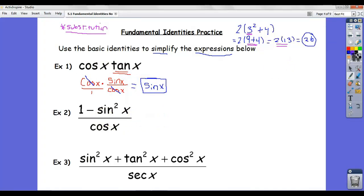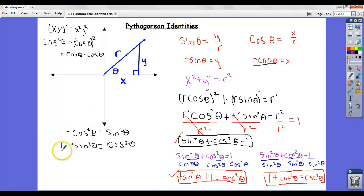Let's try the next example. I've got 1 minus sine squared divided by cosine of x. And so what I think is, okay, is there any substitution? Is there anything I can substitute or anything that looks familiar here that we've come across before that I can substitute in? Well, if you look to the last video, we actually have that 1 minus sine squared is equal to cosine squared.